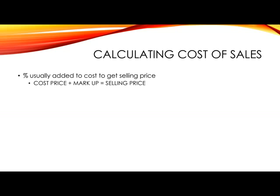The calculation used is: cost price plus the markup — the Rand value added on — to get the selling price. In effect, your markup is actually the gross profit that you are going to achieve. This is calculated by first working out the cost price times the markup percentage, and then adding this figure to the original cost price to get your selling price.